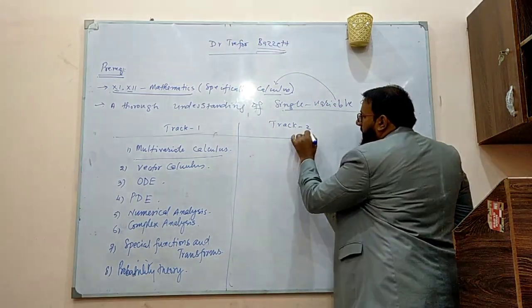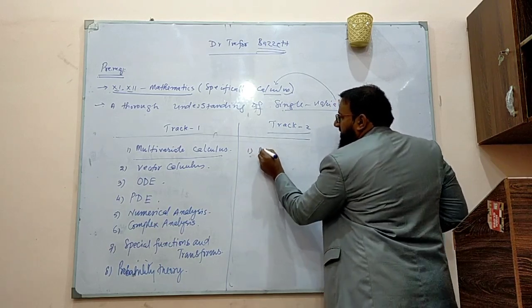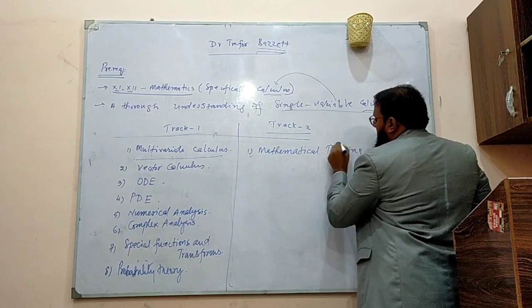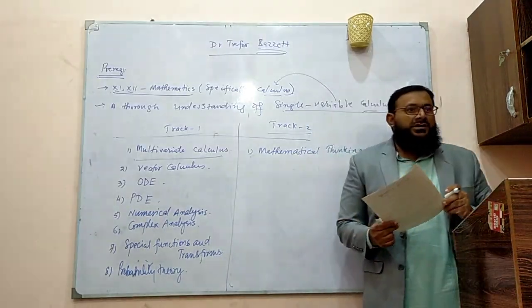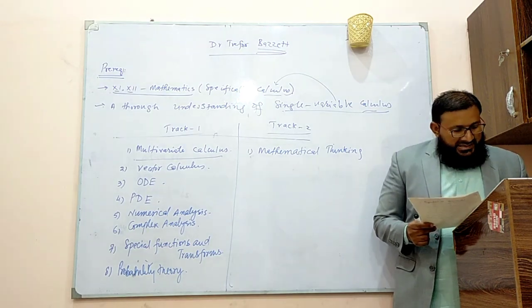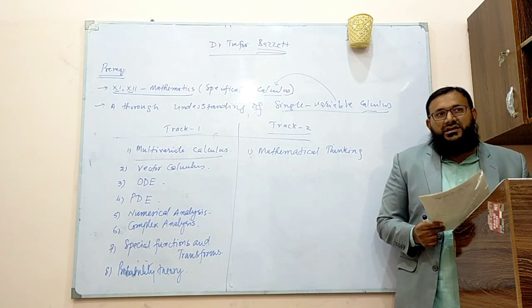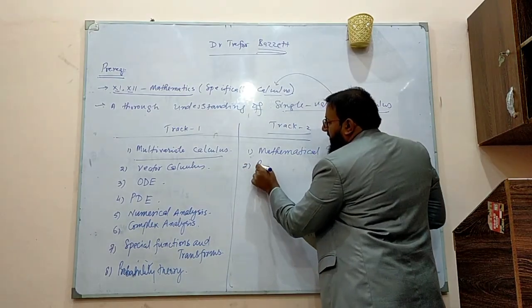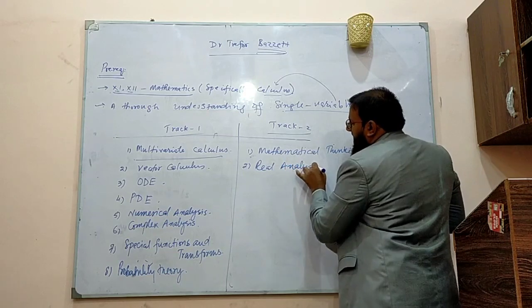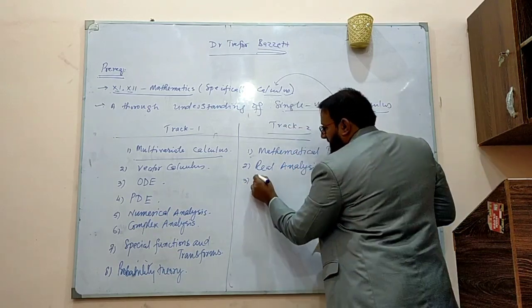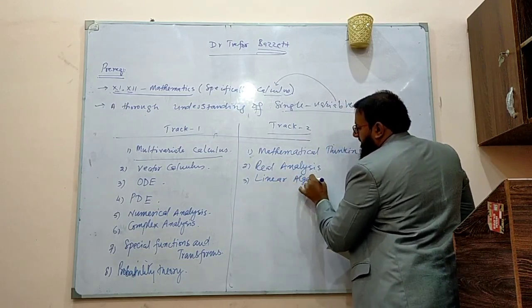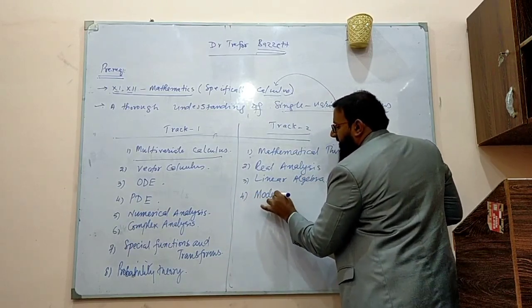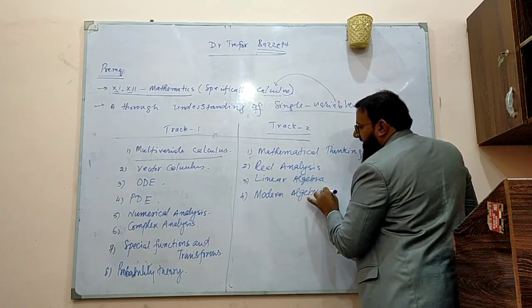And our second track, which will be only comprising the courses on pure mathematics. The first thing that we will be discussing is what we call mathematical thinking. Mathematical thinking means logic, or in our own language we call it discrete mathematics, and it's not a lengthy course. We want only some basic ideas that can be helpful for us when we are dealing with some sort of MCQs. And right after this we will move our discussion towards real analysis, and then linear algebra, and then what we call modern algebra or abstract algebra, in which we have group theory, and ring theory, and fields as well.